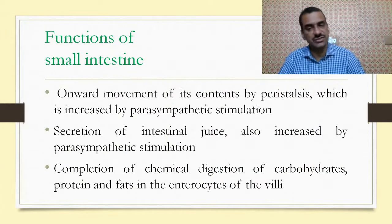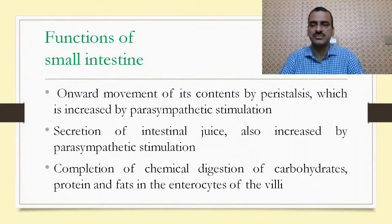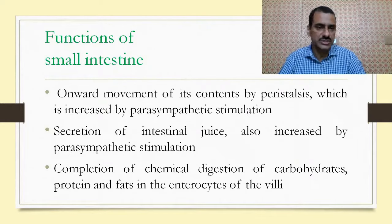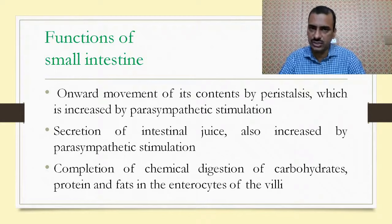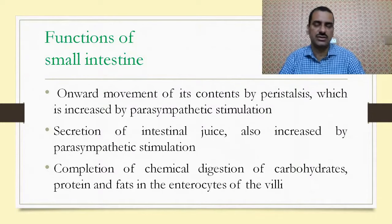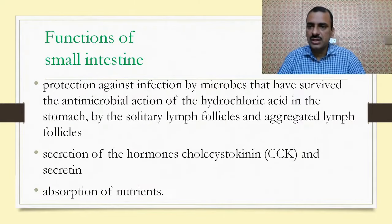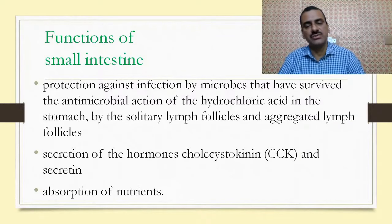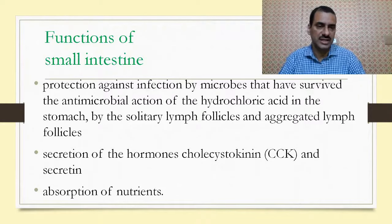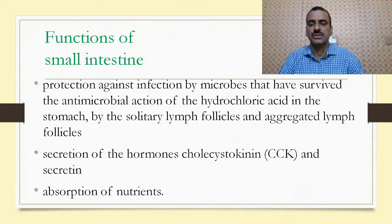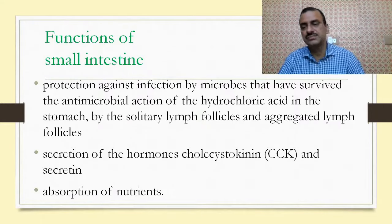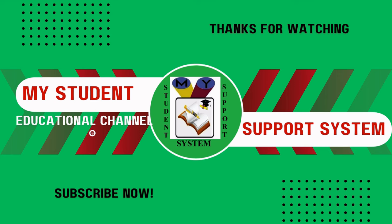Functions of the small intestine: first, onward movement of contents by peristalsis, which is increased by parasympathetic nervous system stimulation. Secretion of intestinal juices is also increased by parasympathetic stimulation. Completion of chemical digestion of carbohydrates, proteins, and fats in the enterocytes of the villi. Protection against infection by microbes that survived the hydrochloric acid of the stomach, via solitary and aggregated lymph follicles. Secretion of hormones cholecystokinin and secretin, and absorption of nutrients.